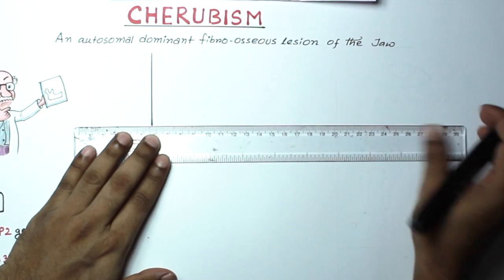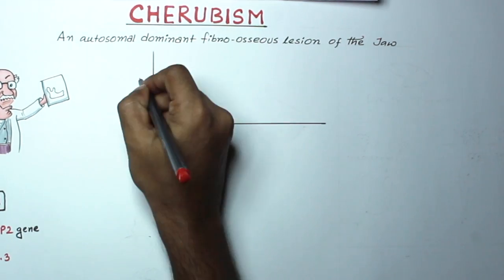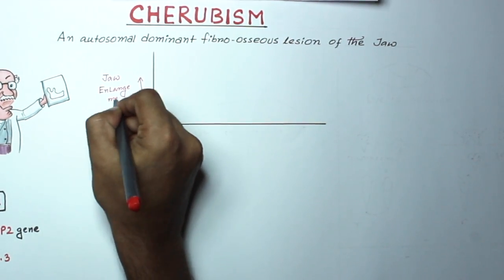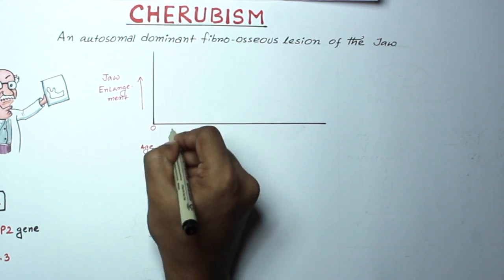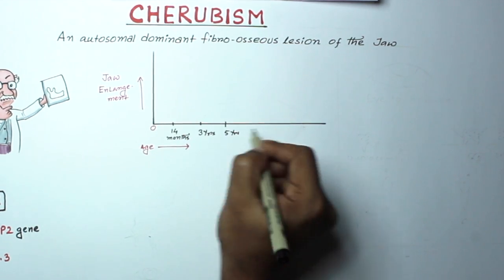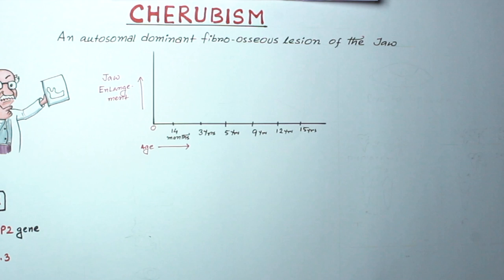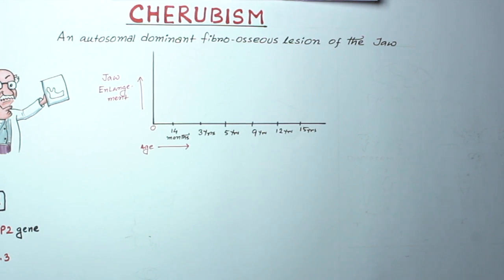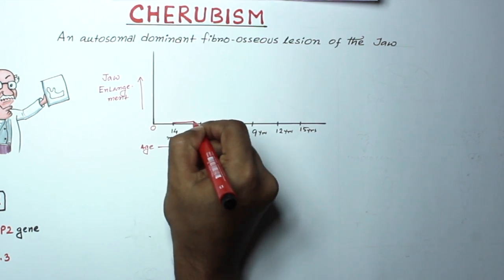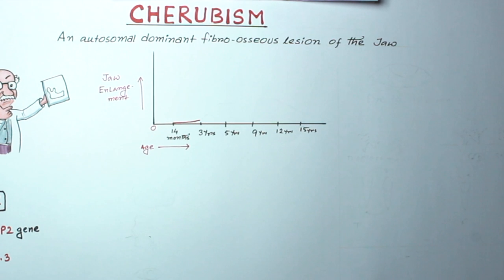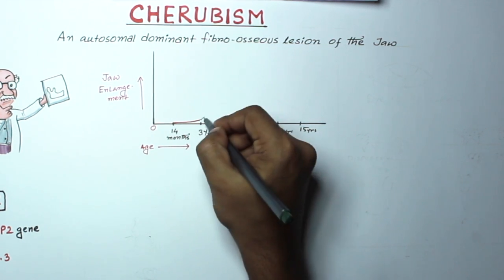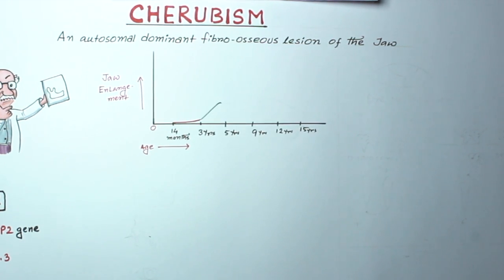Now let's discuss the clinical features. If we put age and jaw enlargement on a graph, it would be like this: affected children are normal at birth and are without clinical or radiographically evident disease until 14 months to 3 years of age - that time the graph will be horizontal. It slows down when the patient reaches five years and then stops by the age of 12 to 15 years.